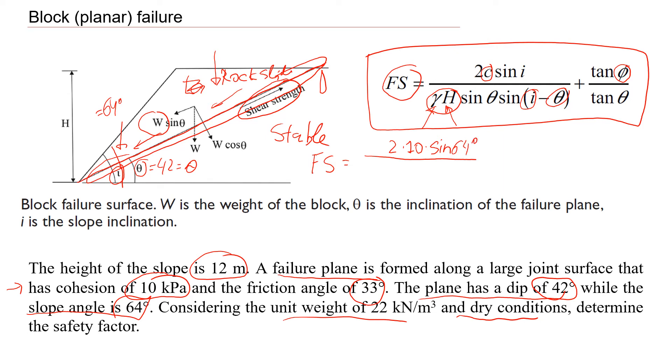In this case, we're going to use cohesion in kPa, because we use a unit weight also in kilonewtons. We just try to keep the same units. You can change it to MPa, then you just need to put it as 0.01 MPa. But I think the best way is just to keep it as it is in kPa.